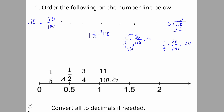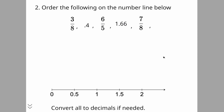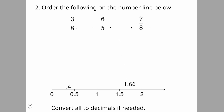Now let's move on to the next question: order the following on the number line below. We have a similar number line but now harder numbers — a decimal and some fractions. Let's start with decimal 0.4, which is going to be right here — it's less than 0.5. Now 1.66 is going to be greater than 1.5 but not quite two, so it's somewhere in between 1.5 and two.